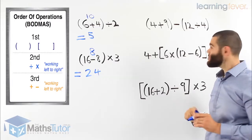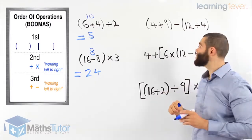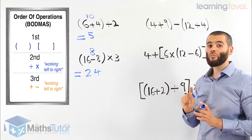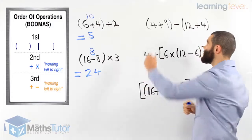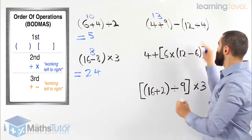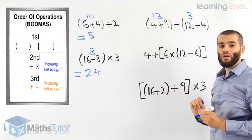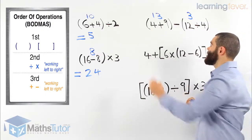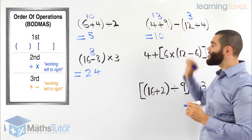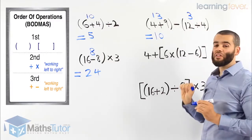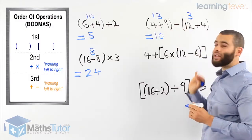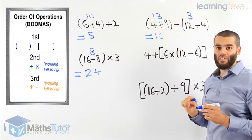Another example. We look at it and we see 4 plus 9 in brackets, take away 12 divided by 4 also in brackets. We follow the order of operations straight away and look for brackets. 4 plus 9 is 13, and 12 divided by 4 is 3. Then we look for a times or divide — there is none. But we have a minus: 13 take away 3, our answer is 10.